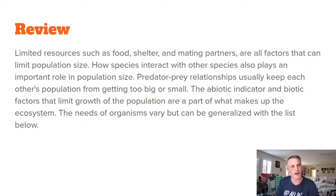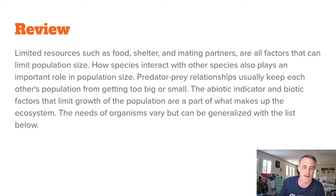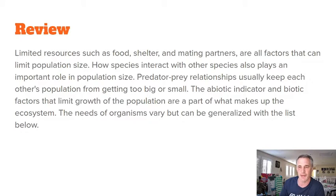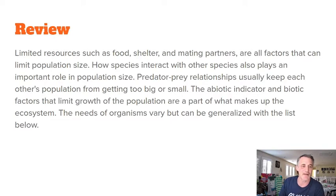Quick review: limited resources such as food, shelter, and mating partners are factors that can limit population size. How species interact with other species also plays an important role. Predator-prey relationships, for example, usually keep each other's populations from getting too big or too small. Abiotic and biotic factors that limit population growth are all part of what makes up the ecosystem.